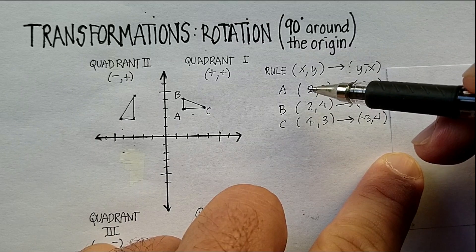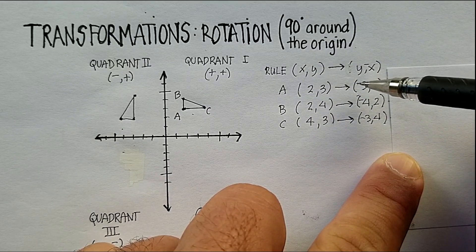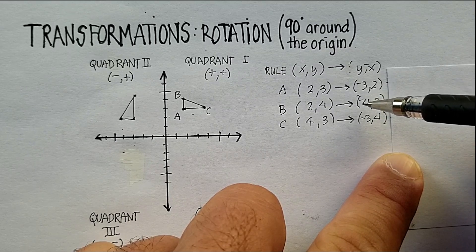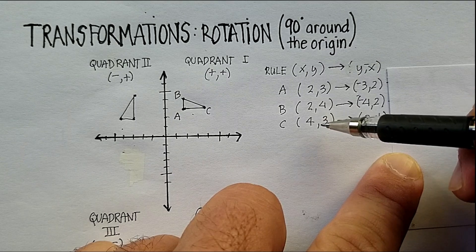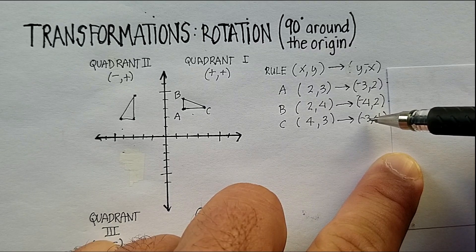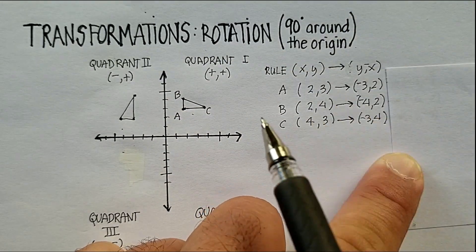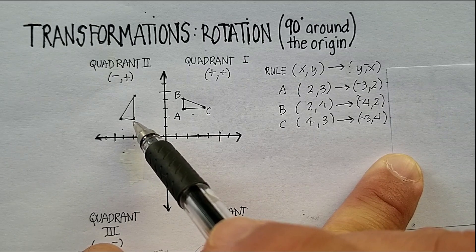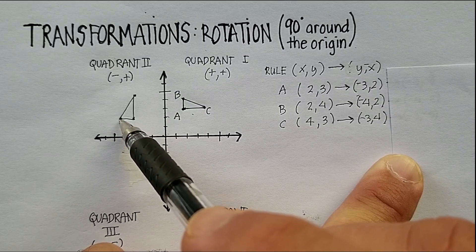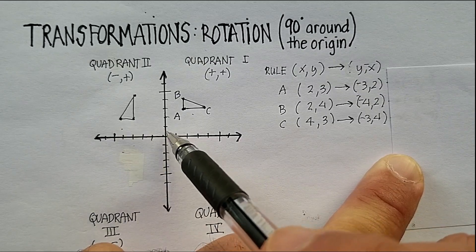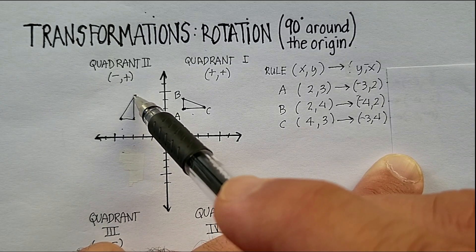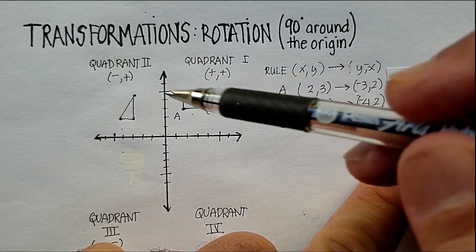Applying the rule: swap the x and y, so one coordinate becomes (3, 2), then make the x negative. Swap the next coordinate to get (2, 4) and make the x negative. Take the last coordinate, swap to get (3, 4), and make the x negative. So our new coordinates are (-3, 2), (-4, 2) — going over negative four then positive two — and (-3, 4).